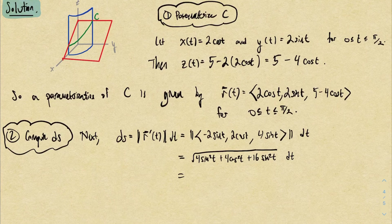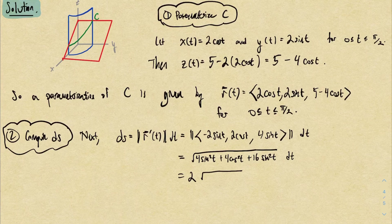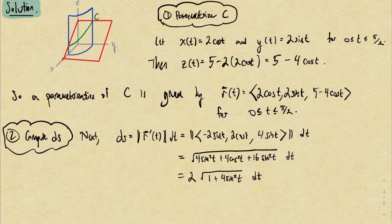I'll do a bunch of stuff in one step. For example, I could factor out a 4 through the square root. That'll give us a 2 outside. Then when I do that, we have a sine squared plus cosine squared that's 1, so I could rewrite this as the square root of 1 plus 4 sine squared t dt.